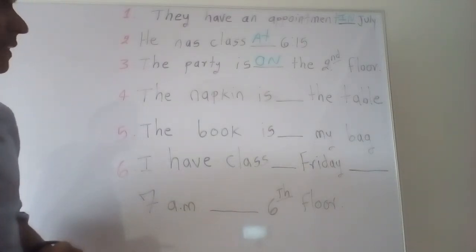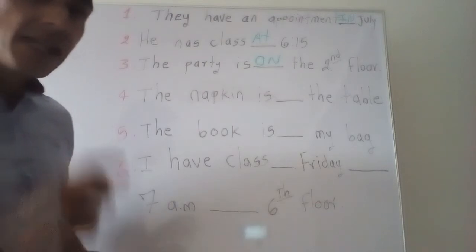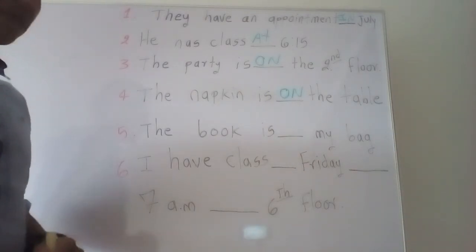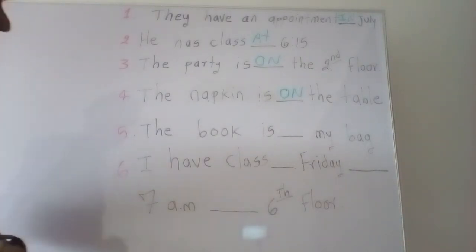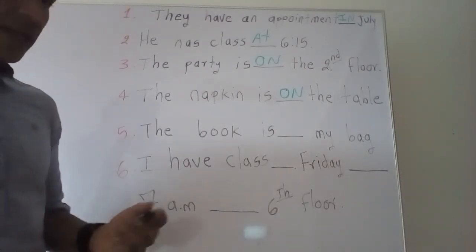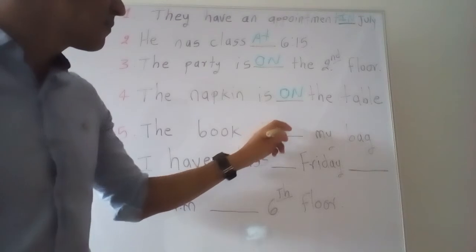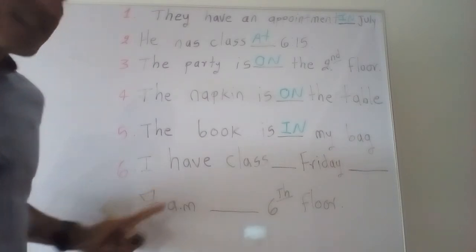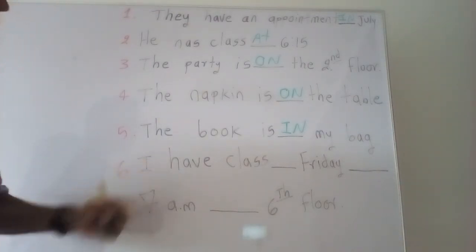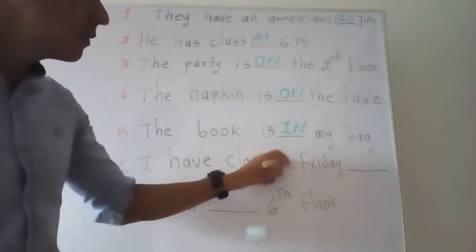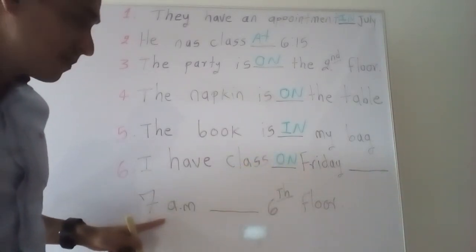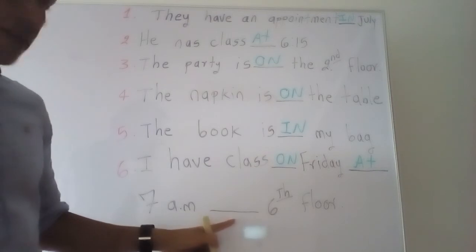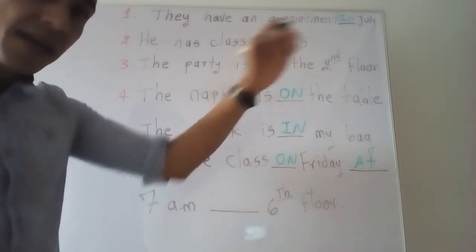Number four: The napkin is ___ the table — we put 'on,' on the table. Number five: The book is ___ my bag — we say 'in my bag,' inside. Number six, the longest sentence: I have class ___ Friday — it's a day, short time, so 'on.' ___ seven — it's the hour, so 'at.' And ___ the sixth floor — it's a place, so 'on.'